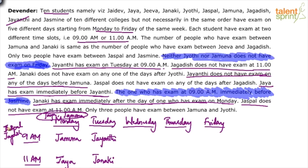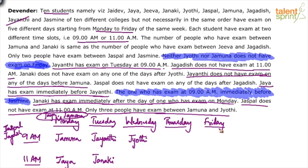Only three people have exam between Jamuna and Jyoti. Jamuna has taken the 9am slot on Monday. The three slots after that are 11am Monday, 9am Tuesday and 11am Tuesday. So after these three slots there should be Jyoti, meaning Jyoti comes on Wednesday. That means five persons have been marked already — Jamuna, Jaya, Jayanti, Janaki and Jyoti.